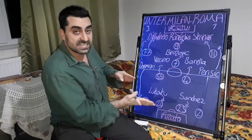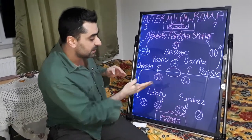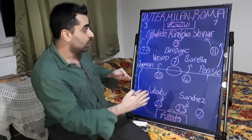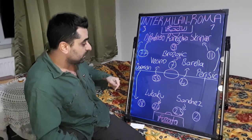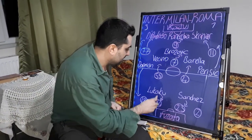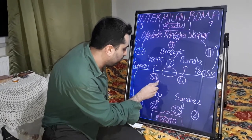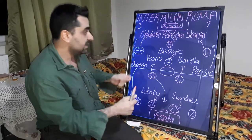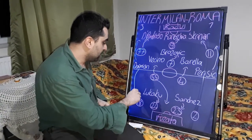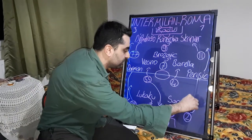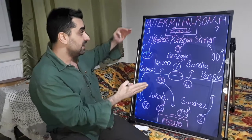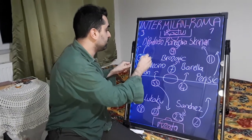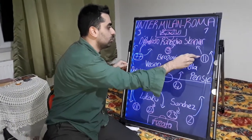Roma set up a higher defensive line, and every time Inter Milan found empty spaces behind and between Roma's defence. In the first half, Darboe dropped deep and came back between the two centre-backs Kumbulla and Mancini. Roma's full-backs Santon and Karstorp moved higher and wider together to provide width, and when they pushed up, Mkhitaryan and Pedro tucked inside together.